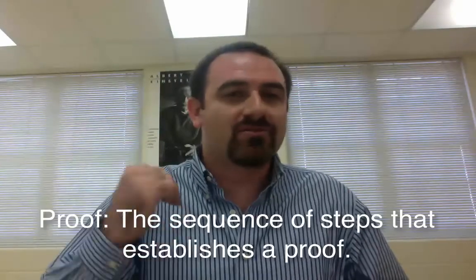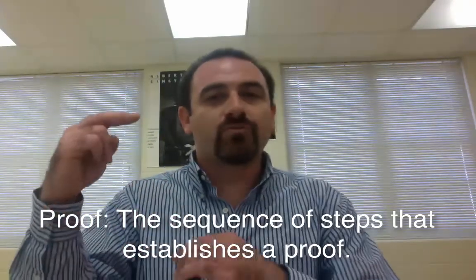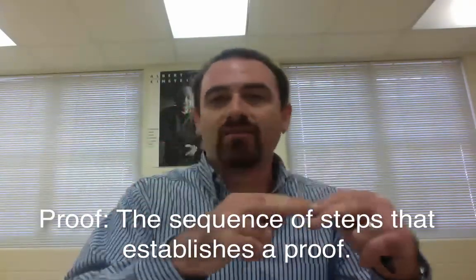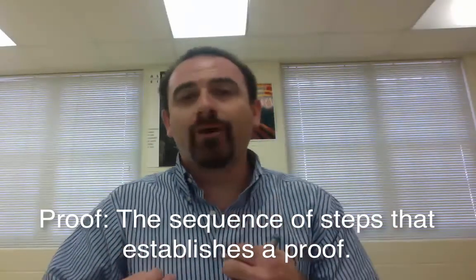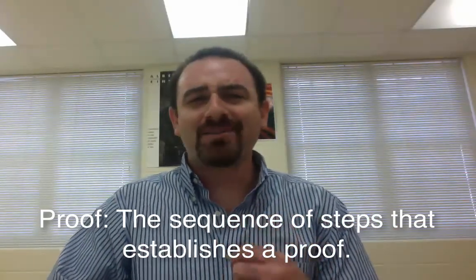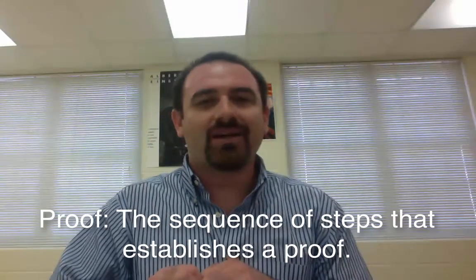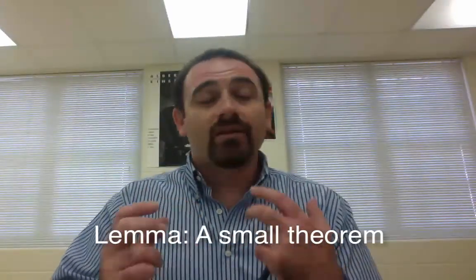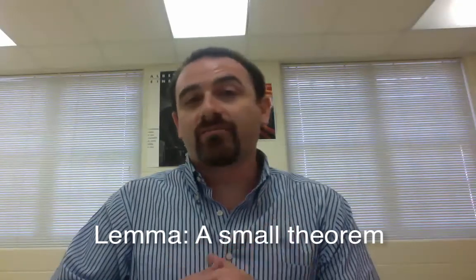A proof, all a proof is, is that sequence of logical steps to get to the theorem. So a proof is what we do to establish a theorem. A lemma, all a lemma is, is a little proof. A little theorem, rather. So a lemma is a small proof, usually that we use as a stepping stone to get to a larger theorem. But really, functionally, they do the same thing. You must prove a lemma in the same way that you must prove a theorem.